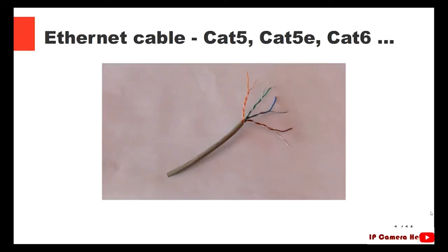Let's talk more about Ethernet cable: Cat5, Cat5e, Cat6. This is an example of Cat5 or Cat5e. You can see four pairs of twisted copper wires. Each pair is one color: orange, orange-white, green, green-white, blue, blue-white, brown, brown-white — all inside one sleeve. All those cables — Cat5, Cat5e, Cat6 — have those wires. The difference is the way they are twisted and the way the cable is built inside. Cat5 is the older type, Cat5e is more modern, and Cat6 is a newer cable with much higher parameters.